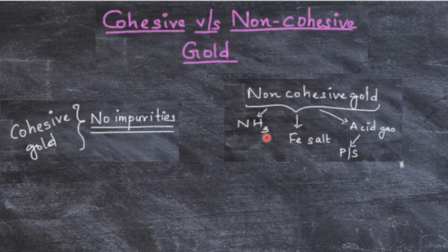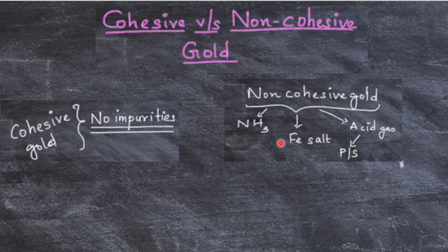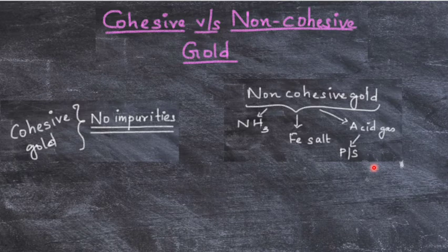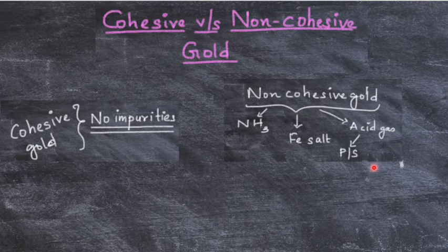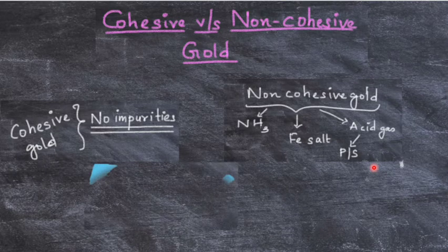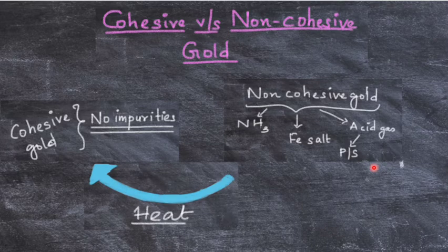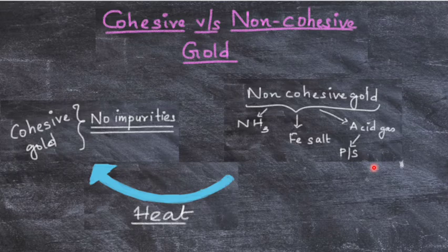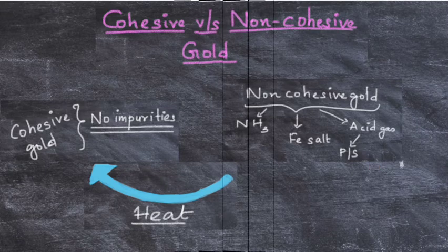The manufacturer absorbs certain impurities like ammonia (most commonly used), iron salt, or acid gases which can be phosphorus or sulfur-containing gases on the surface of gold to produce an impure form: non-cohesive gold. This film can be reverted back to normal cohesive gold by heating it to a particular temperature. Non-cohesive gold is rarely used nowadays, but when used, it is used to build the bulk of the restoration.